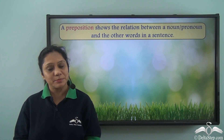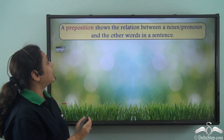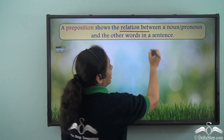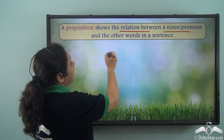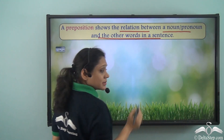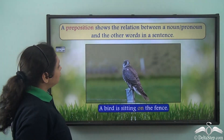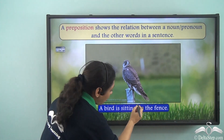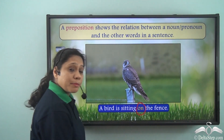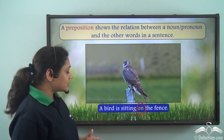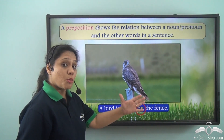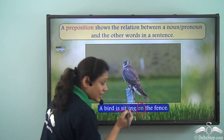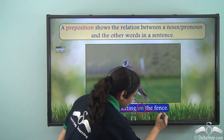We have already learned prepositions and we know that a preposition shows the relation between a noun or a pronoun and the other words in a sentence. So if we have a sentence like 'a bird is sitting on the fence,' 'on' is the preposition showing a relation — the bird is sitting where? On the fence. So it is showing a relation between 'is sitting' and 'the fence.'